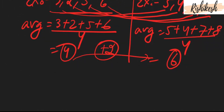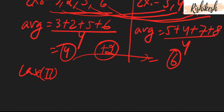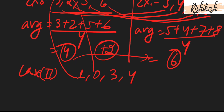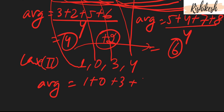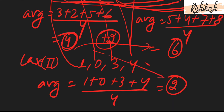In case 2, if we decrease all quantities by 2, we get {3-2, 2-2, 5-2, 6-2} = {1, 0, 3, 4}. The average is 1 + 0 + 3 + 4 divided by 4, which comes out to be 2. Since the original average was 4 and we decreased all quantities by 2, the average has also decreased by 2. These two cases prove that if every quantity is increased or decreased by k, then the average will also increase or decrease by that quantity k.